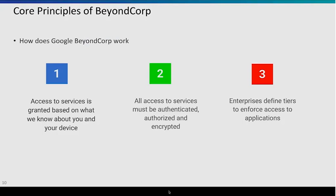At the heart, there are three core principles of BeyondCorp. The first is that we need to know context about the request itself — that's exactly the zero trust model. On every request that comes to an application, whether that's Gmail or an application deployed in the cloud, we should know a set of things: what's your identity, what's your device state, does your device have a cert that we've issued. There are lots of things we need to know about the request.